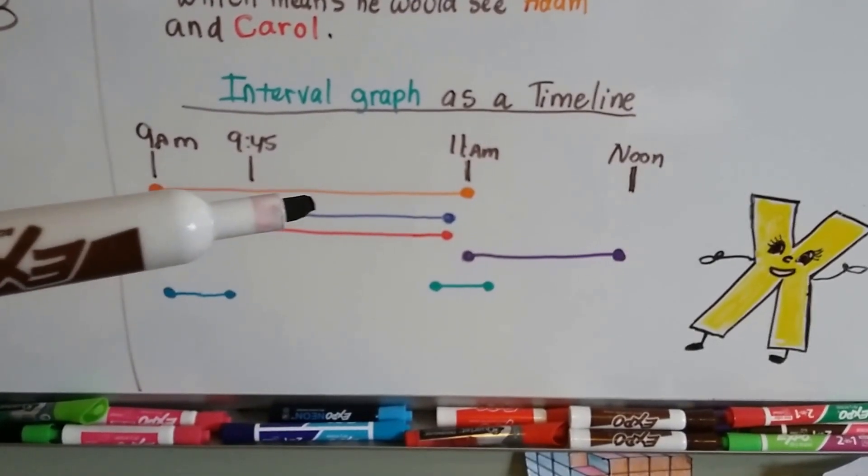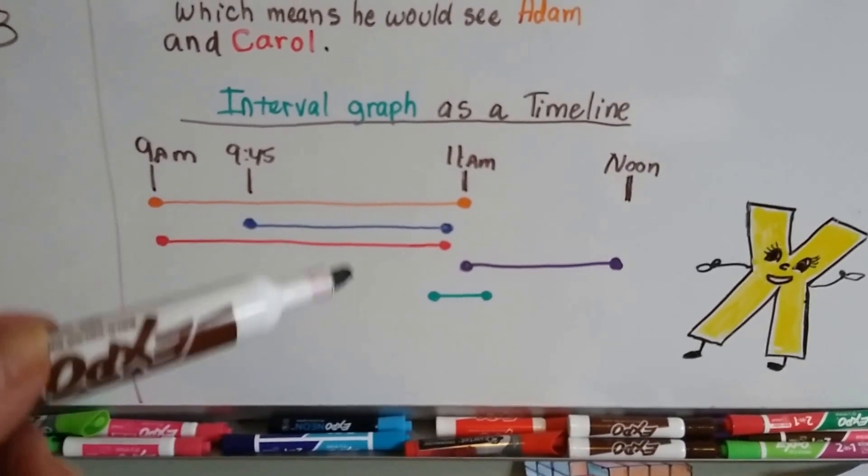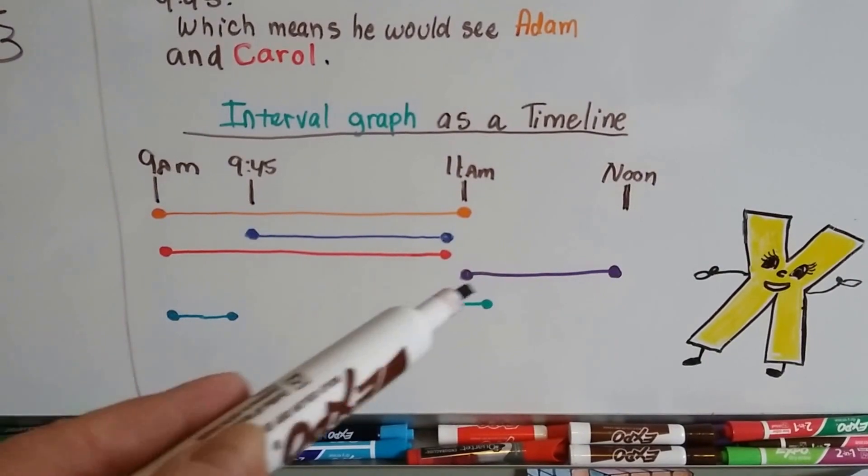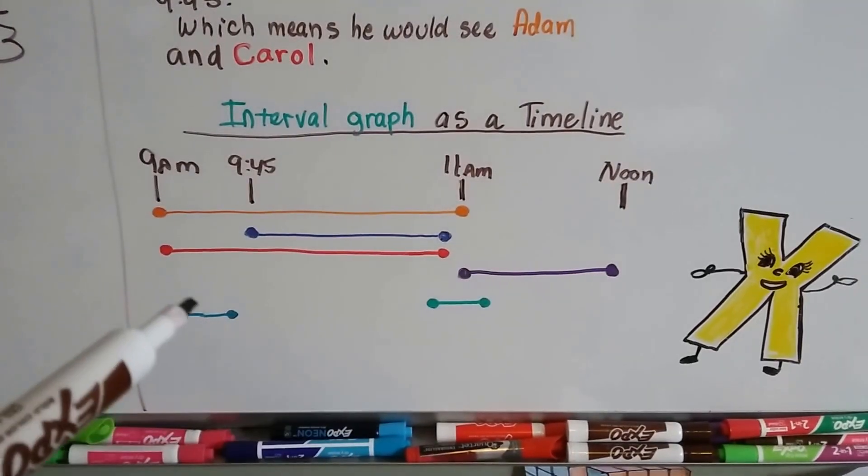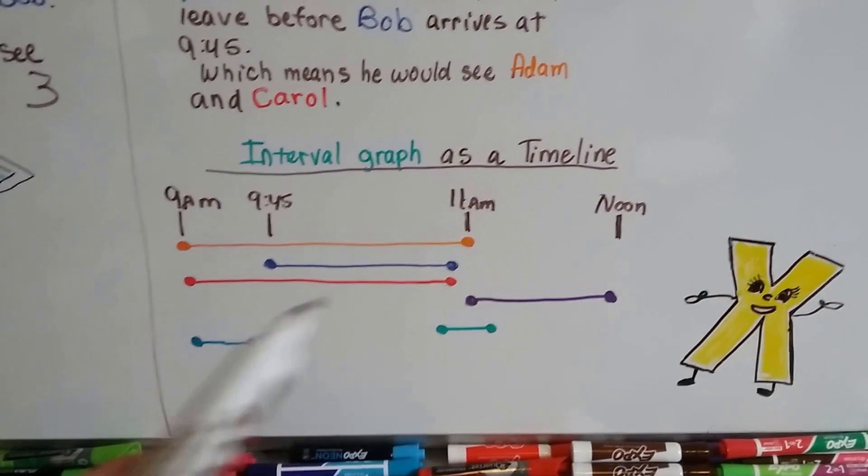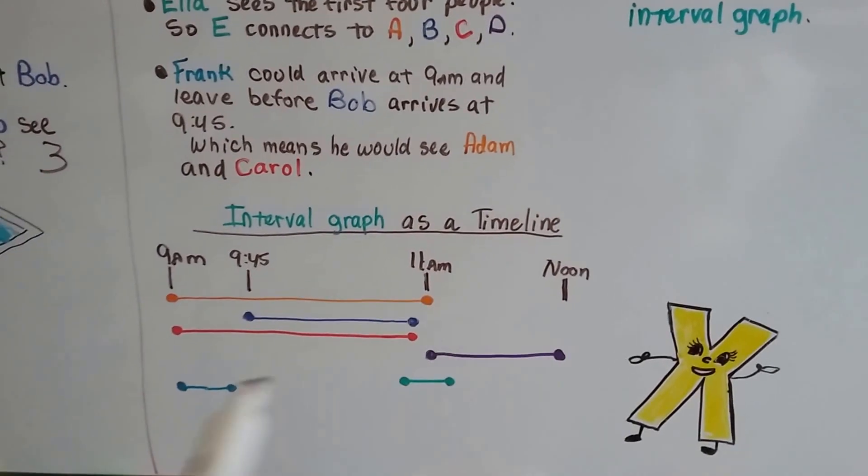There's one, two, three people that are definitely at the pool at the same time. We can see how Ella can see these three and this one, but she doesn't see Frank. They showed up at two different times, and that's why E doesn't connect to F. See how they're separate from each other?